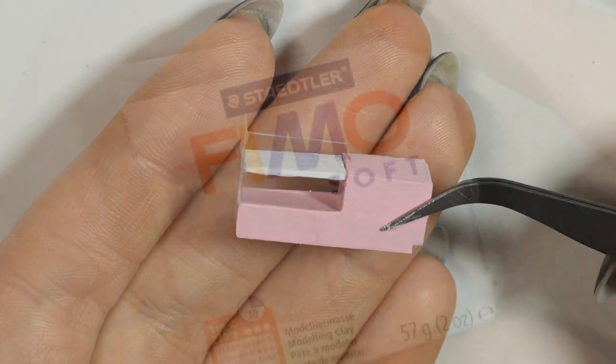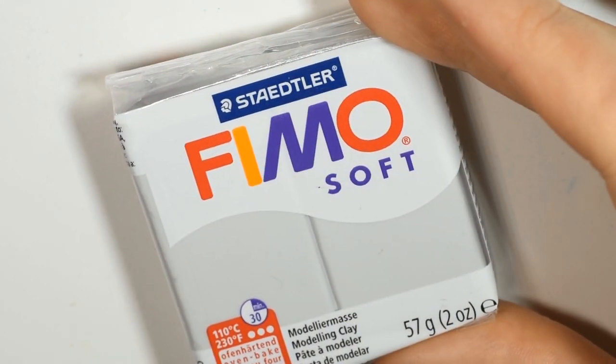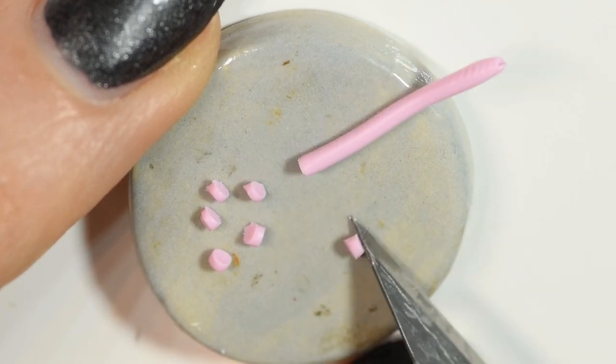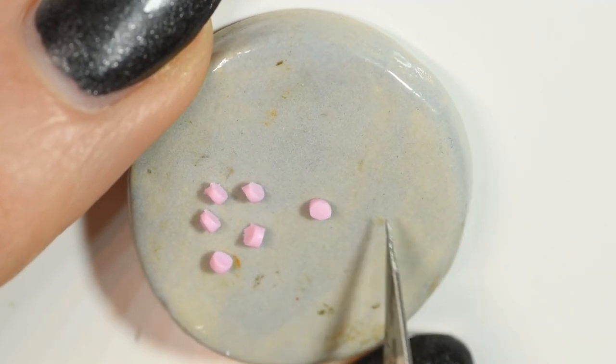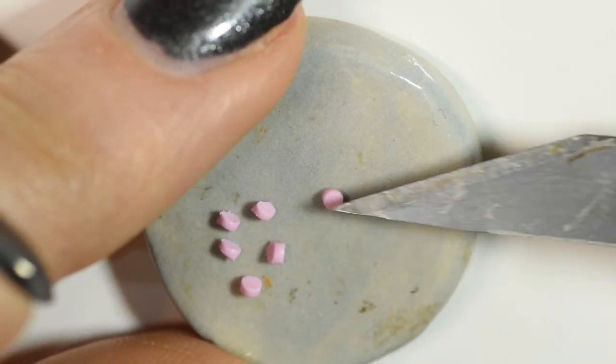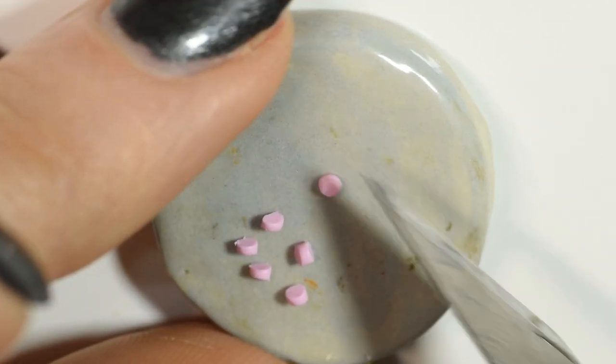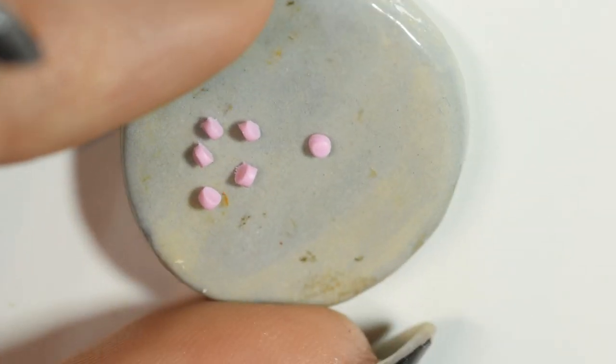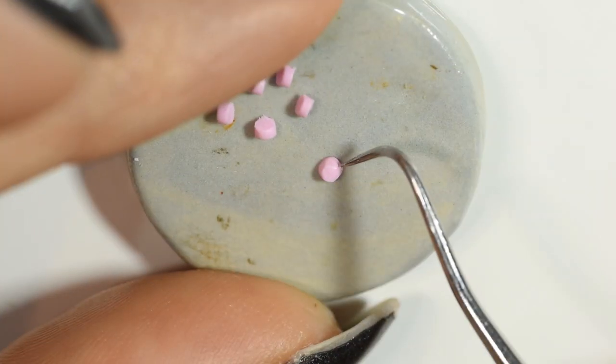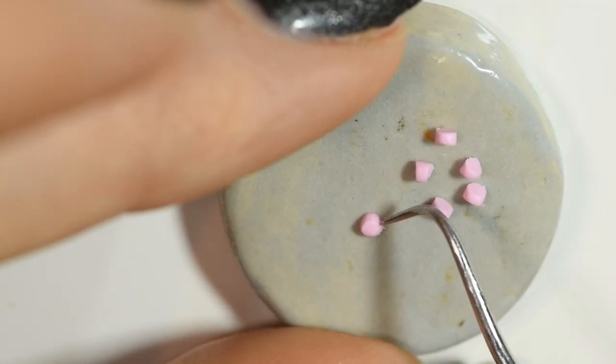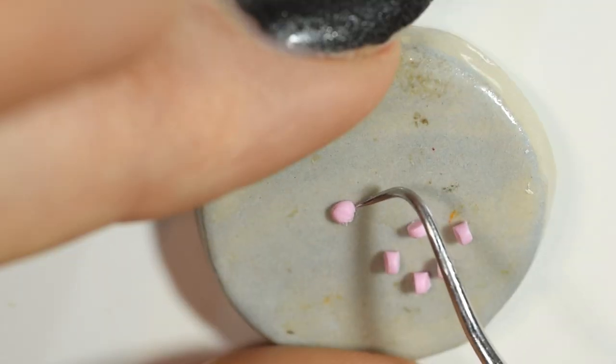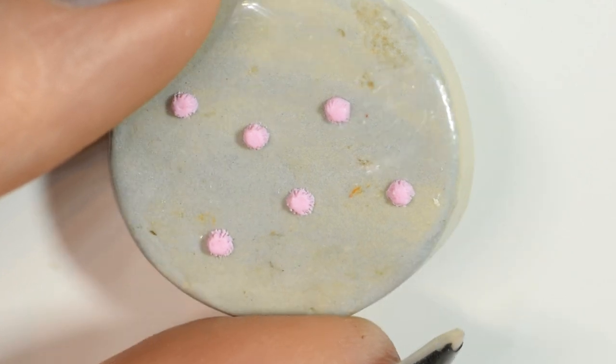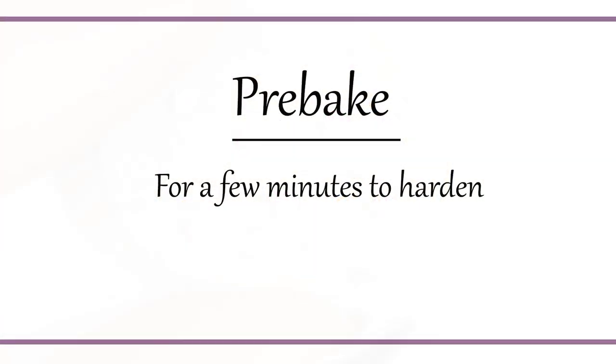Now we're gonna make some tiny baked goods using polymer clay. I started by making some tiny cupcakes. Then I used my basic sculpting tools like my exacto knife, dotting tools, and needle tools. Once you have your cupcake bases done you want to pre-bake them for about one or two minutes just to harden so you can hold them.